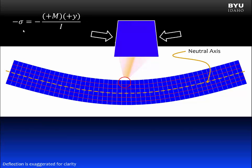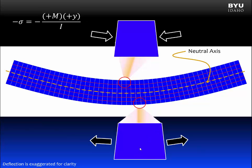Now let's consider an element at the bottom of the beam. We can see that that element is being stretched — it's feeling tension forces. Applying the flexure formula, the moment in the beam is still positive. But now the sign on y is negative, because we are below the neutral axis. This makes the stress come out as positive. This also makes sense because a tension force produces a positive normal stress, or a positive tension stress. That is why the sign is important.